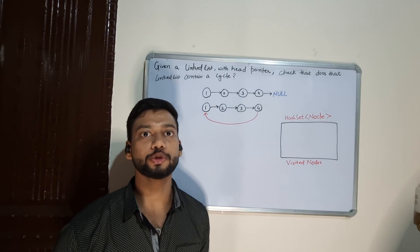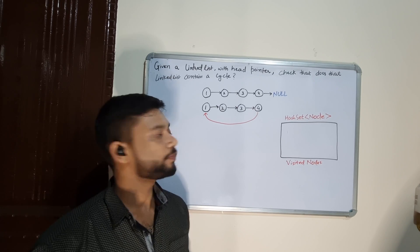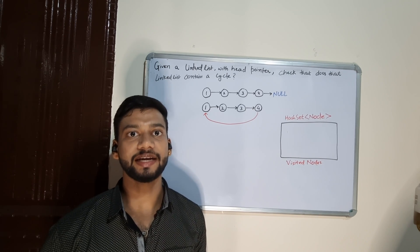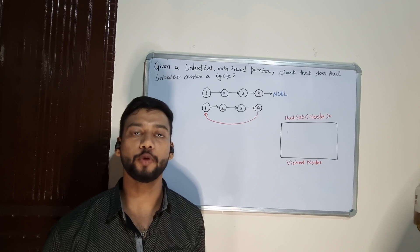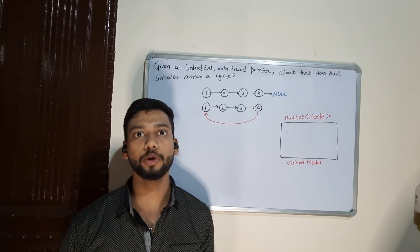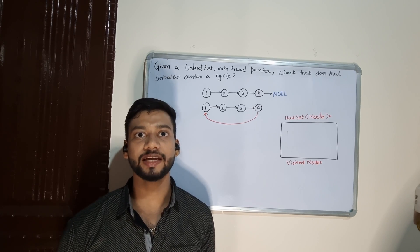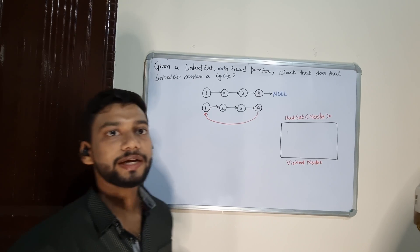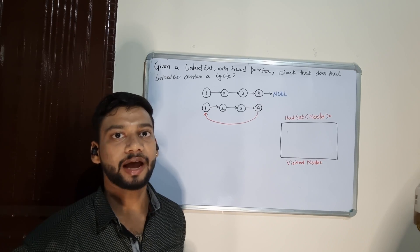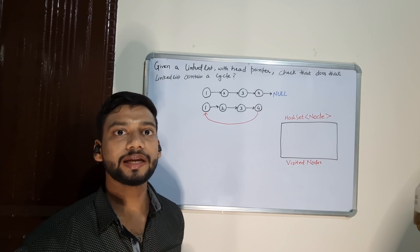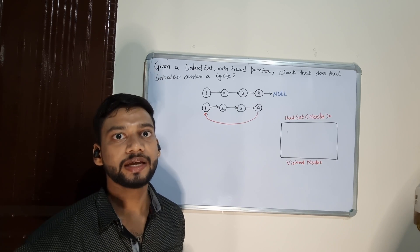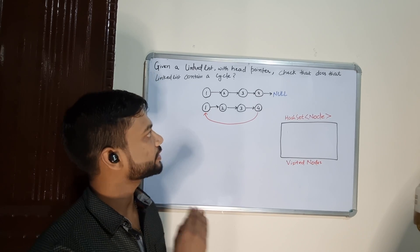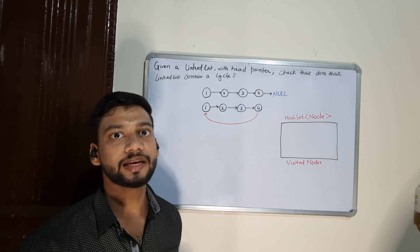One possible solution to this problem is using a hash set. We will use a hash set to keep track of all the visited nodes. A hash set is a data structure which provides lookup in O(1) time. The basic logic is: we traverse through our linked list and keep track of all visited nodes. If we encounter a node that is already visited, we can say the linked list contains a cycle. If we encounter null while traversing, the linked list does not contain a cycle.